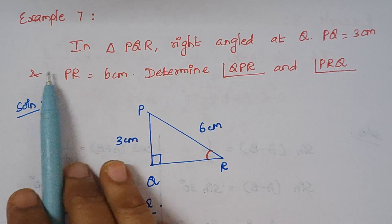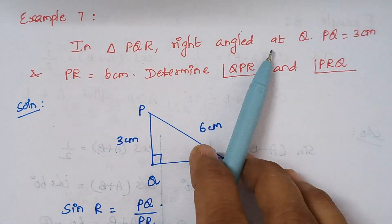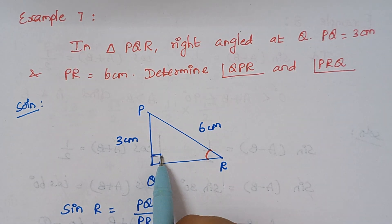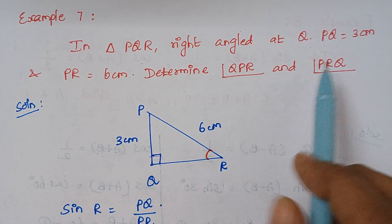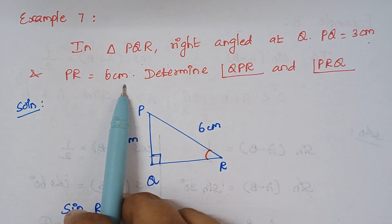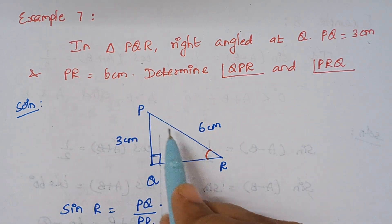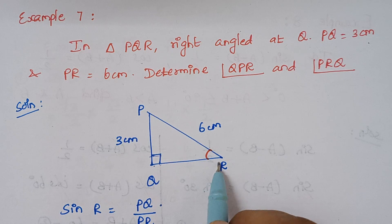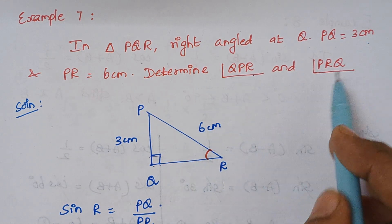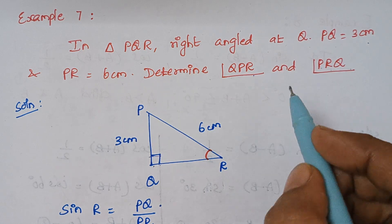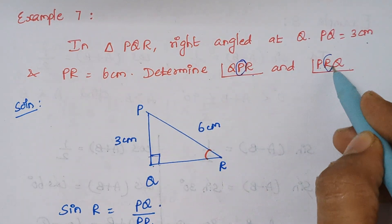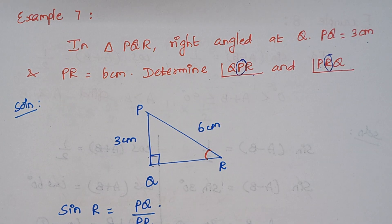Problem 7: In triangle PQR, right angle at Q. Draw the triangle with the right angle at Q. PQ is 3 centimeters and PR is 6 centimeters. We have to find angle QPR (angle P) and angle PRQ (angle R).